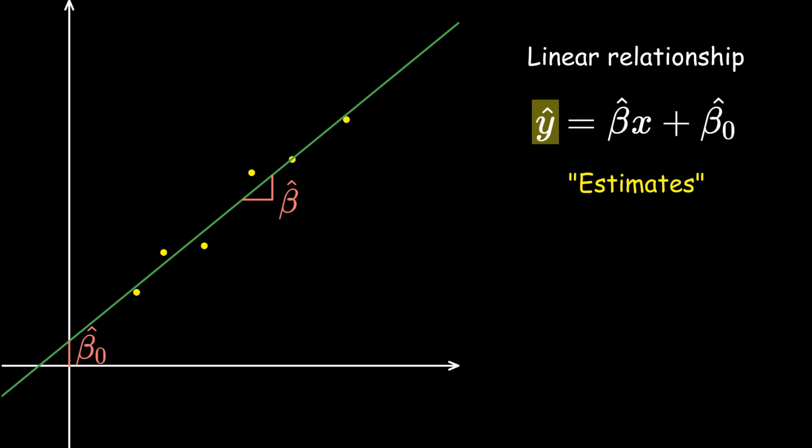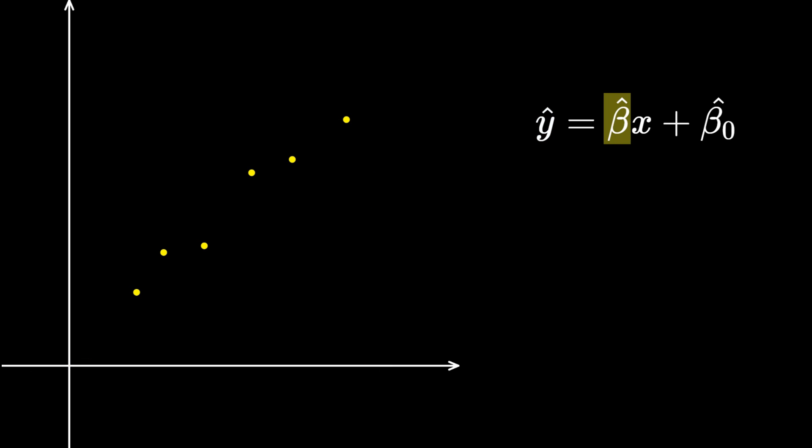Likewise, we put a hat on the y, since at any given input x, we are only given an estimate of the corresponding output y, and that estimate might not be correct. The slope beta hat is calculated using this formula: beta hat equals the sum over all x-i minus x-bar times y-i minus y-bar divided by the sum of all x-i minus x-bar squared. Whew, that's a mouthful!